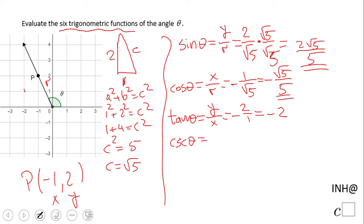Cosecant of theta will be the reciprocal of sine, r over y, and we're gonna flip it and we have √5 over 2.